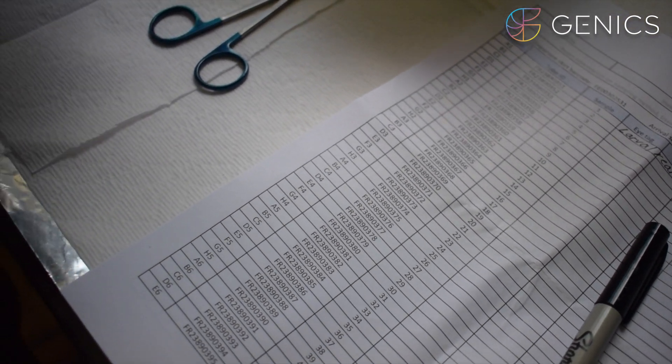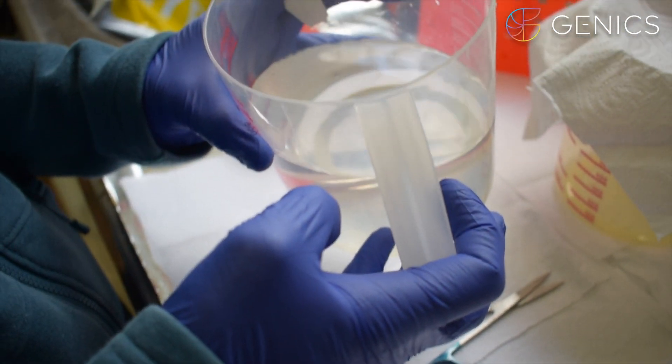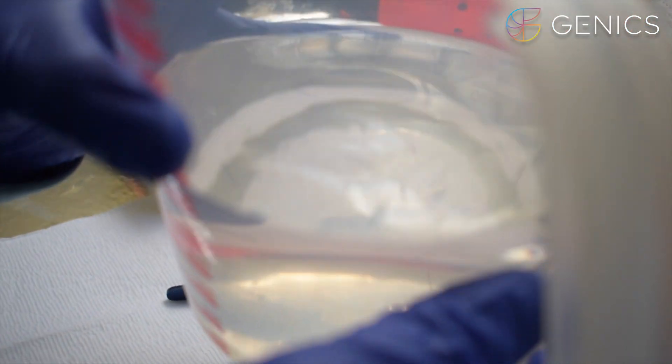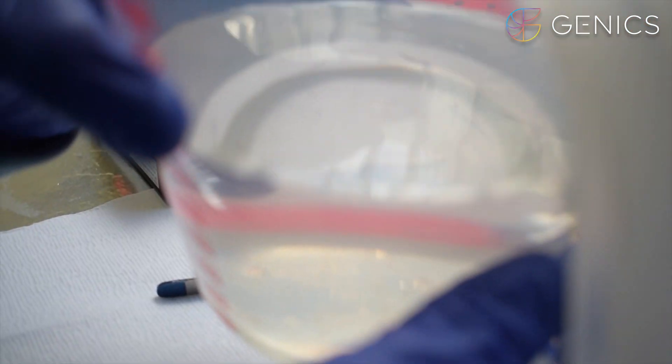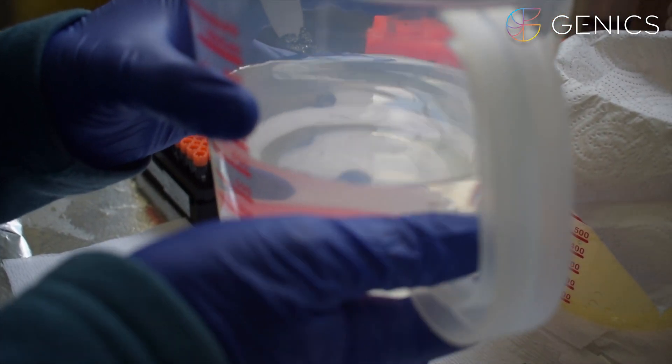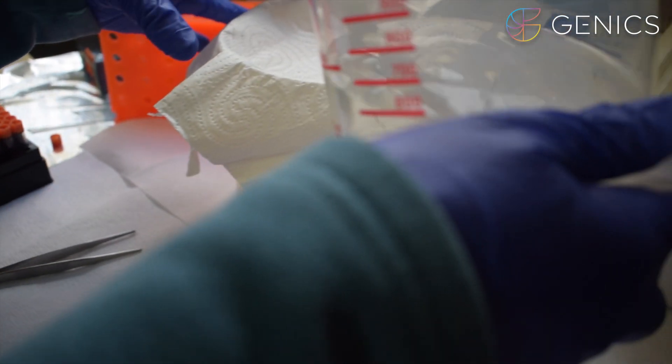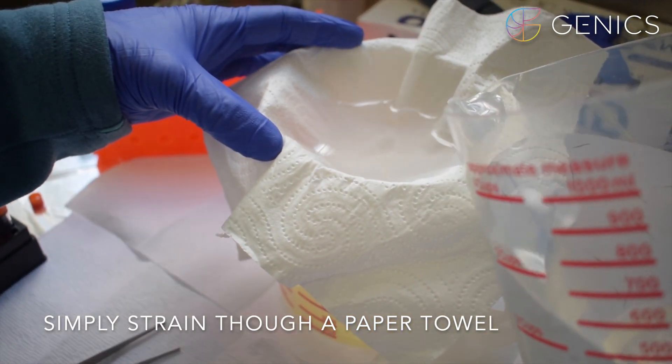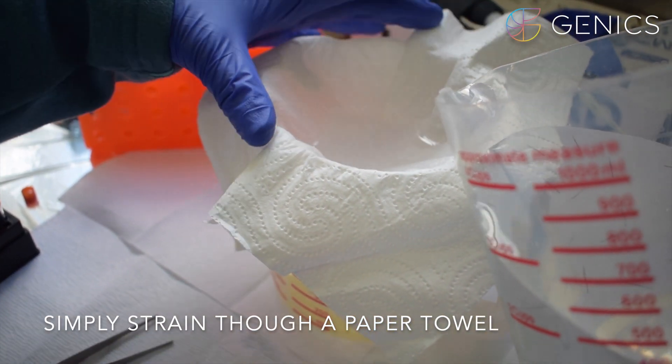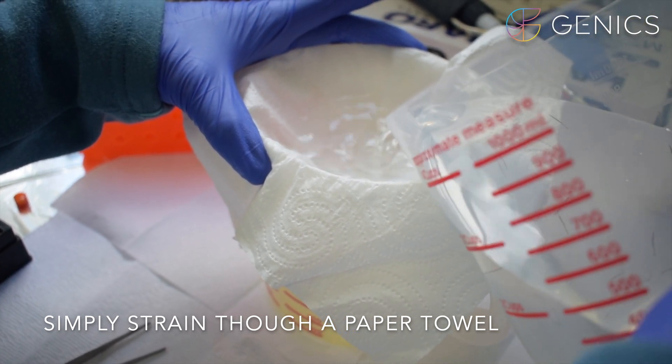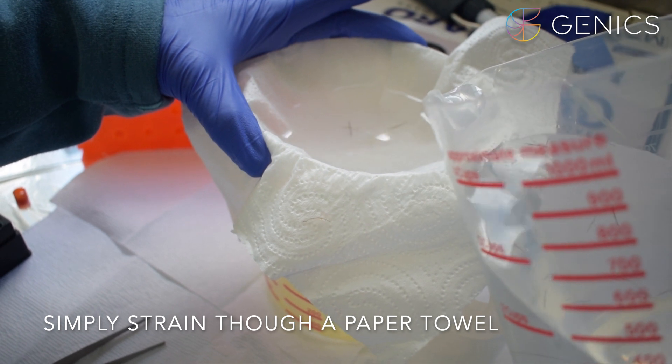Over here in this plastic container I have our tank 4 post larvae. The water has had ice added to it to slow down their metabolism to euthanize the shrimp. We then pour our shrimp through a clean piece of paper towel to strain them and remove the water. This makes them easy to pick up with the tweezers or forceps so that we can sample the head region.